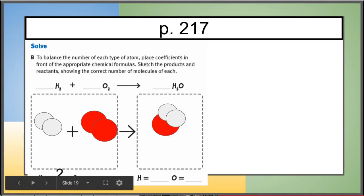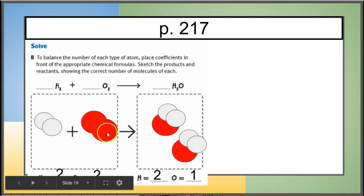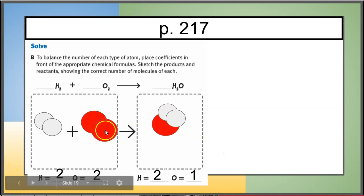Count them up: two hydrogens and two oxygens on the left side. On the right side there are two hydrogens and one oxygen. There are two oxygens on the left and only one on the right, so I need to add another water molecule to match the two oxygens.